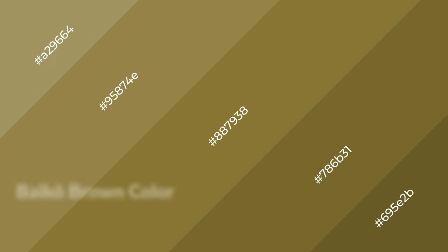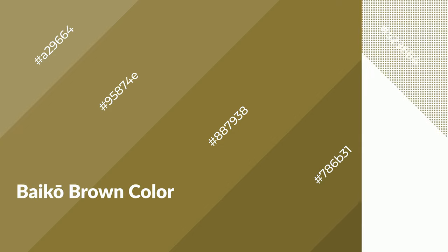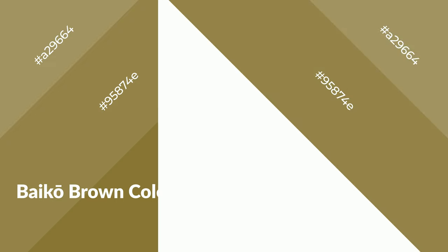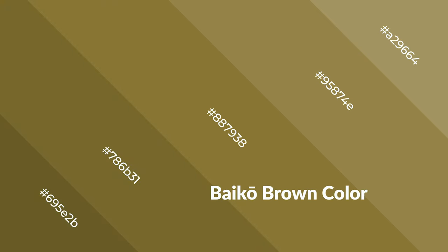Bico brown is a warm color and it emits cozier and active emotions. Warm colors are symbols of warmth, fire, heat, and sunshine. It also evokes joy, passion, love, and even anger. You can see them used in restaurants and gyms.